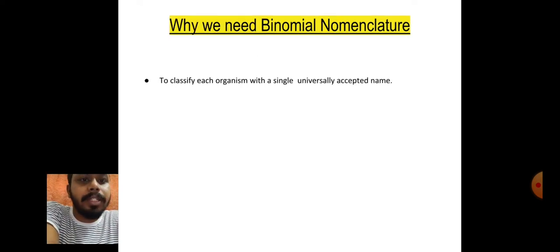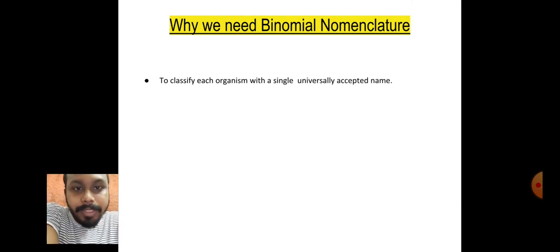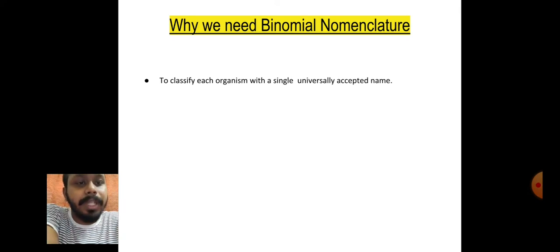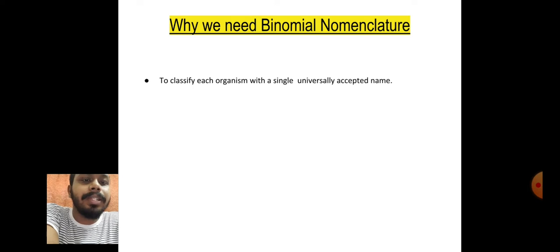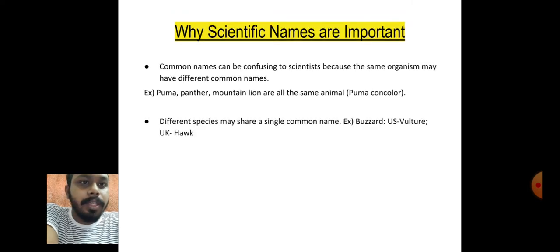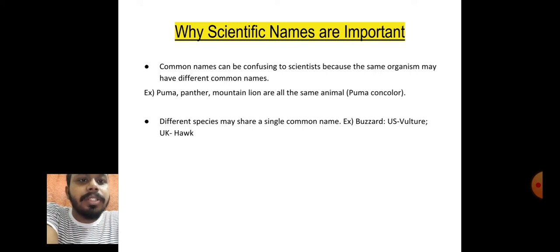Now let's discuss about why we need binomial nomenclature — what is its importance. The purpose is to classify each organism with a single universally accepted name. One organism should have only one single universally accepted name; that's why binomial nomenclature was introduced.